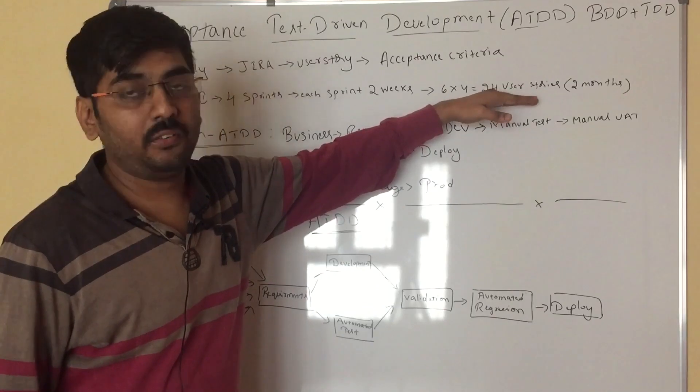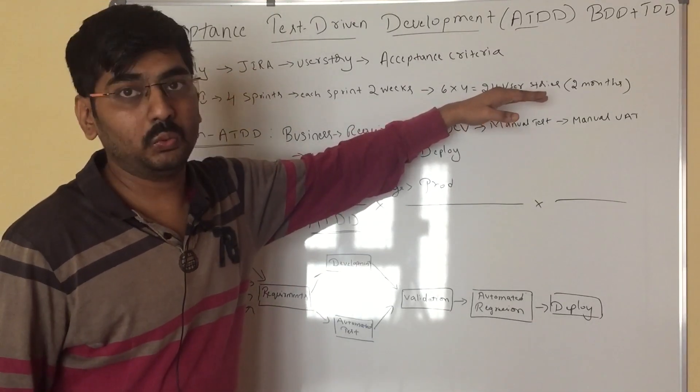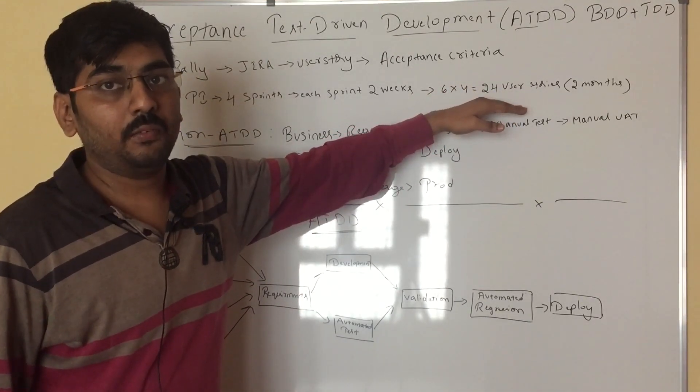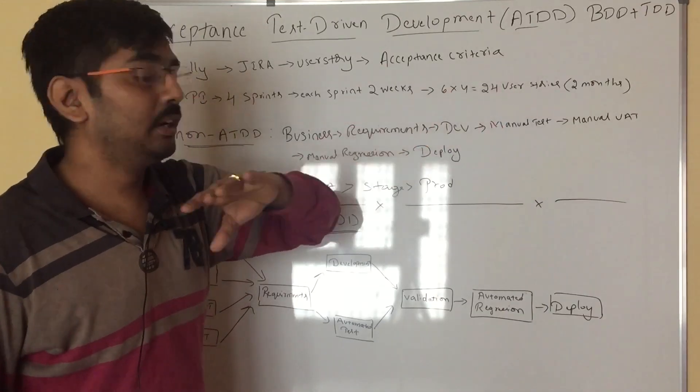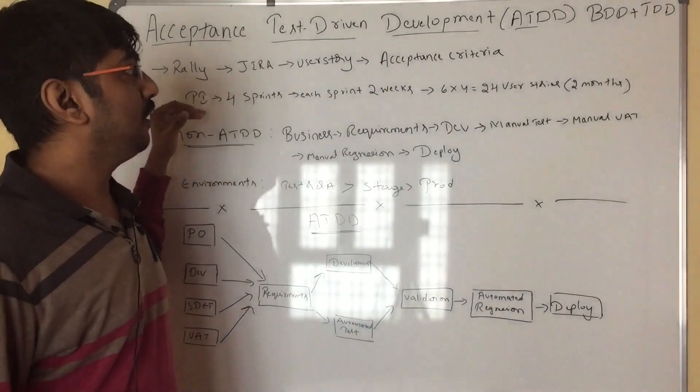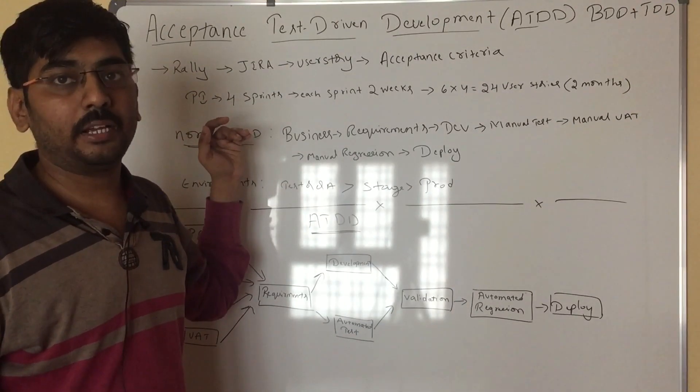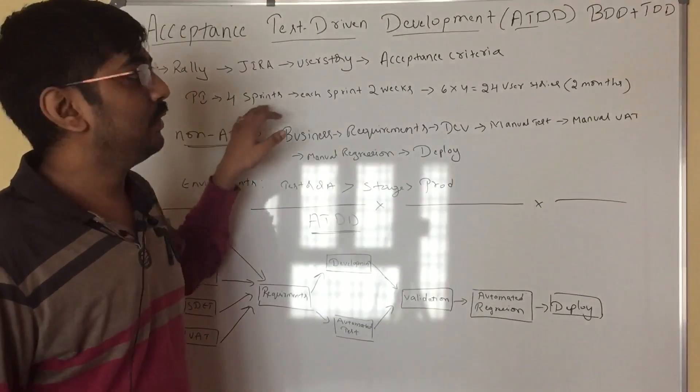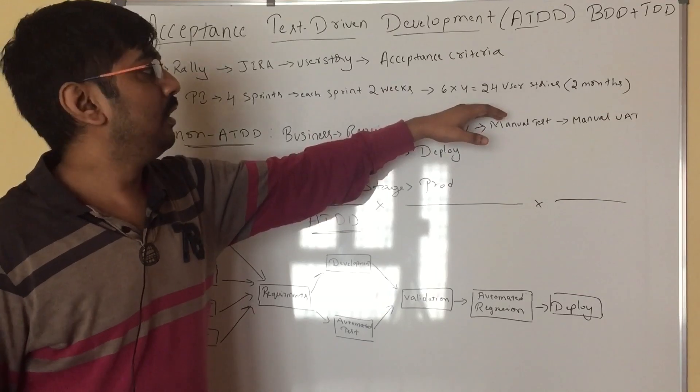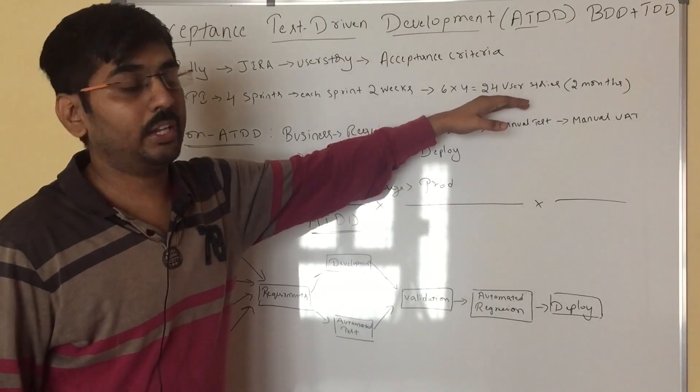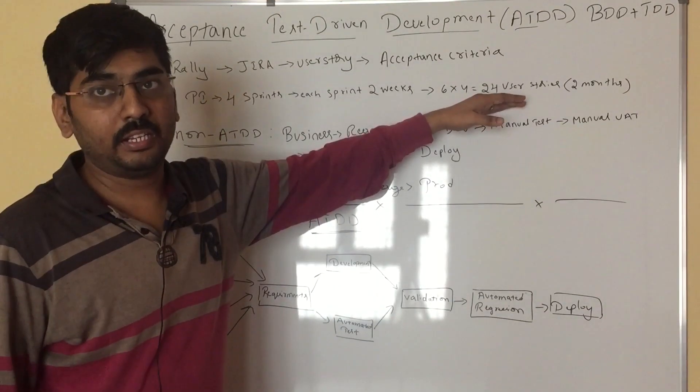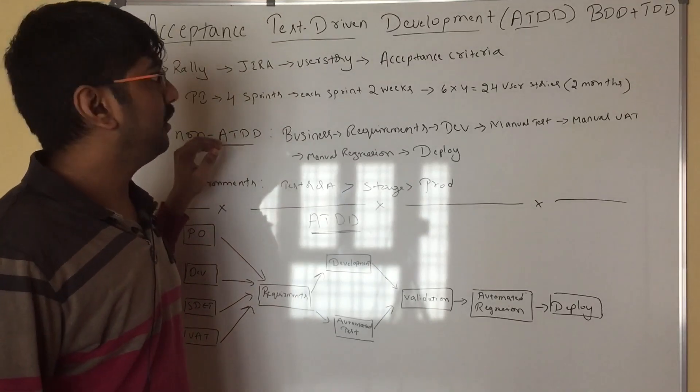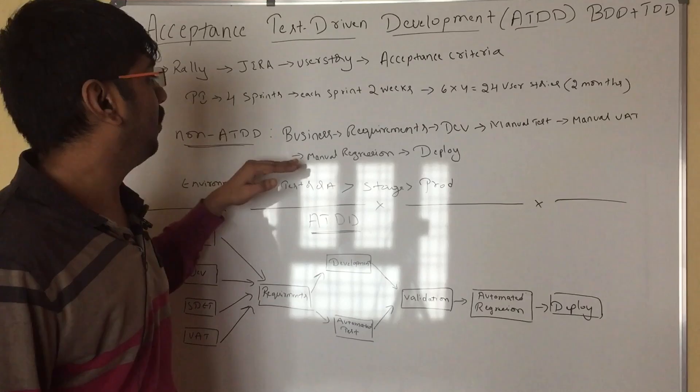It will be very difficult for you to do this regression and user stories manually with limited QA. Depending on the Agile team, there will be two or three max. In our company, I am only the tester. It will be very difficult for us to do this in this way. We can do it, but chances of leaking defects is more in this way. This is non-ATDD, if we are not following ATDD, how the process will be like.